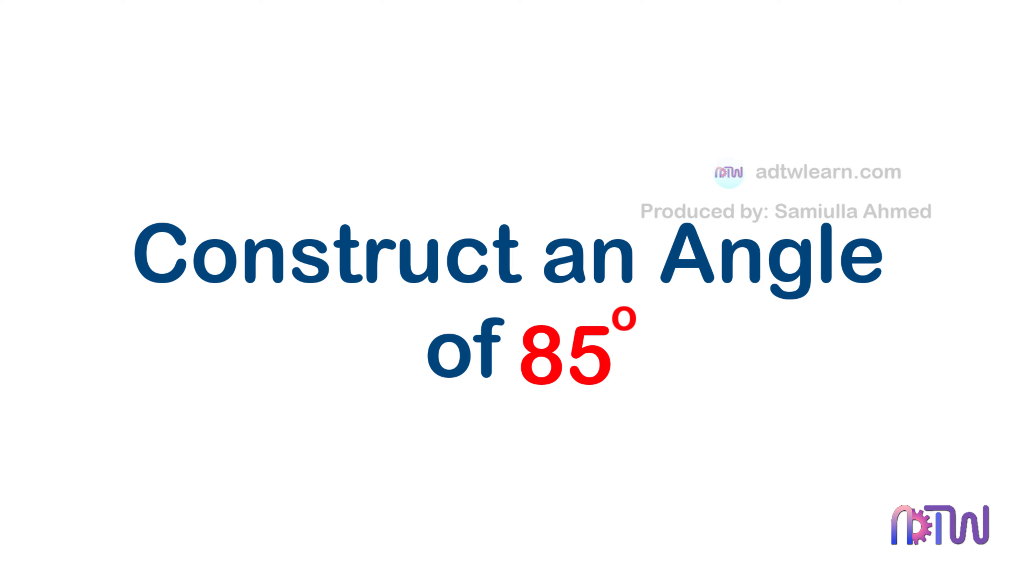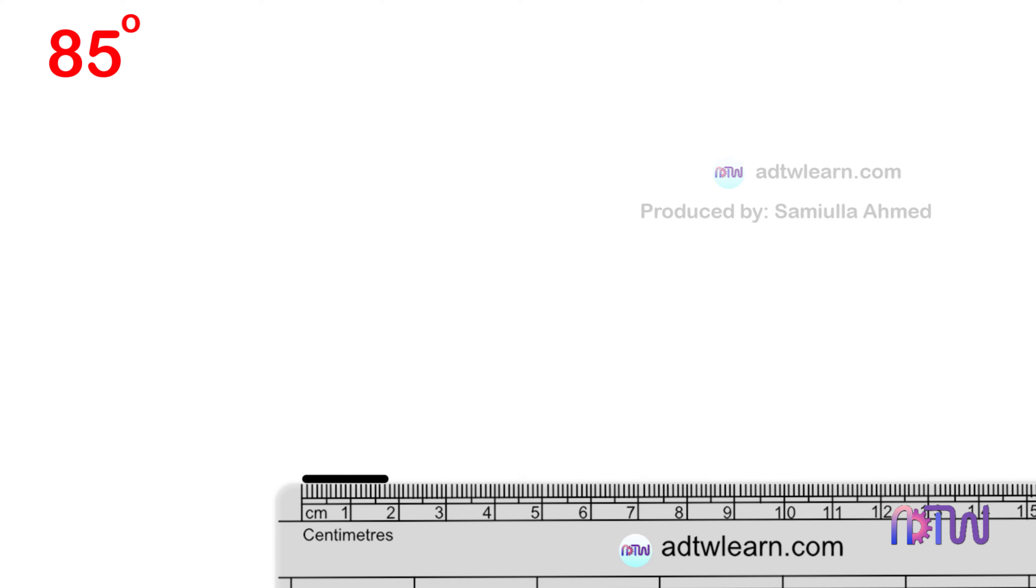In this video, we will see how to construct a line inclined at 85 degrees. Take a ruler, draw a horizontal line, and label the endpoints as A and B. Extend this line to a suitable length.